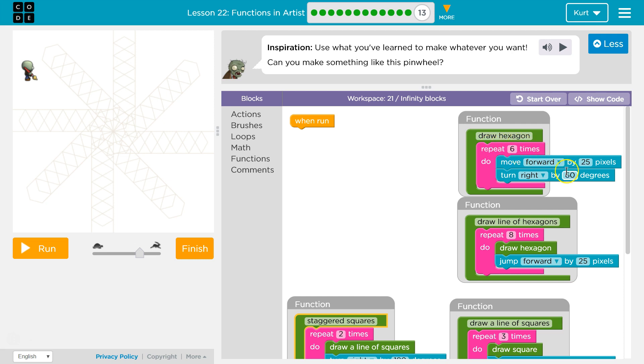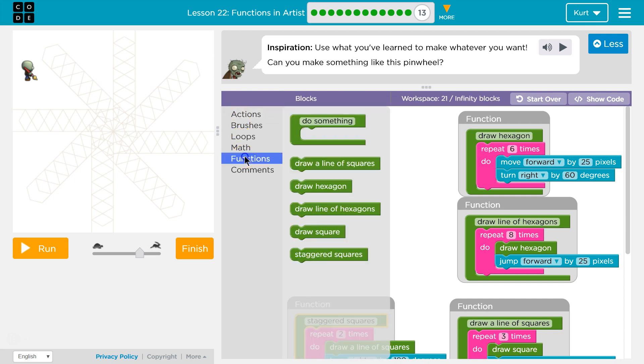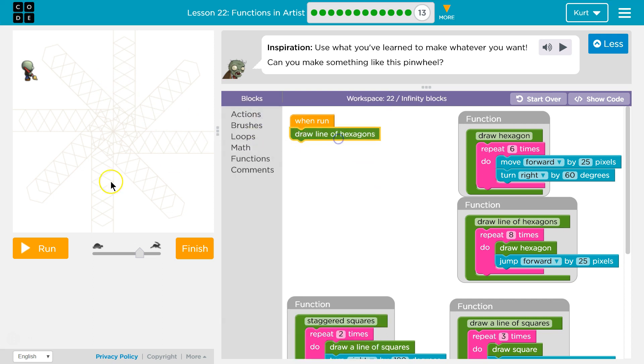It's going to do six sides of our hexagon. Once that's done, we jump forward, draw another hexagon. All right. Let's see here. Hmm. Do we need? Okay, let's do a function. I see, I don't see squares in this unless I'm missing them. Let's draw a line of hexagons and just double check.